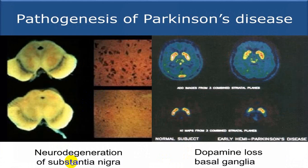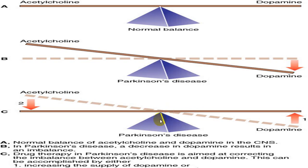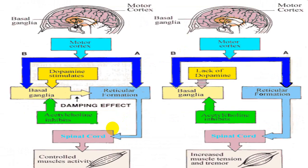Neurodegeneration of substantia nigra leads to dopamine loss and Parkinson's disease. The balance between acetylcholine and dopamine is disrupted — dopamine level is reduced and acetylcholine level rises, giving rise to classical Parkinson's disease. Treatment aims to restore balance so that dopamine comes up and acetylcholine becomes equal to dopamine — that is the treatment principle in Parkinsonism.